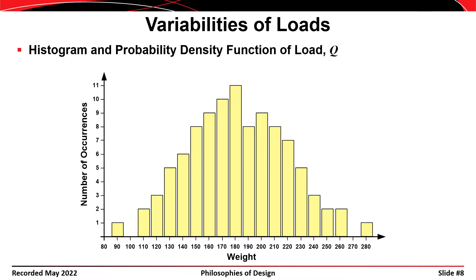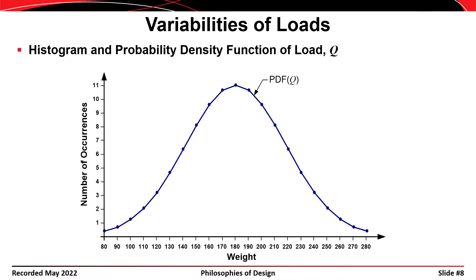A more useful way of presenting the data is to fit a curve to it — a probability density function of Q. That is a continuous curve and a statistically useful representation of the data. We make the histogram go away and work with this bell-shaped curve as a representation of the weight of 100 students in a hypothetical class.